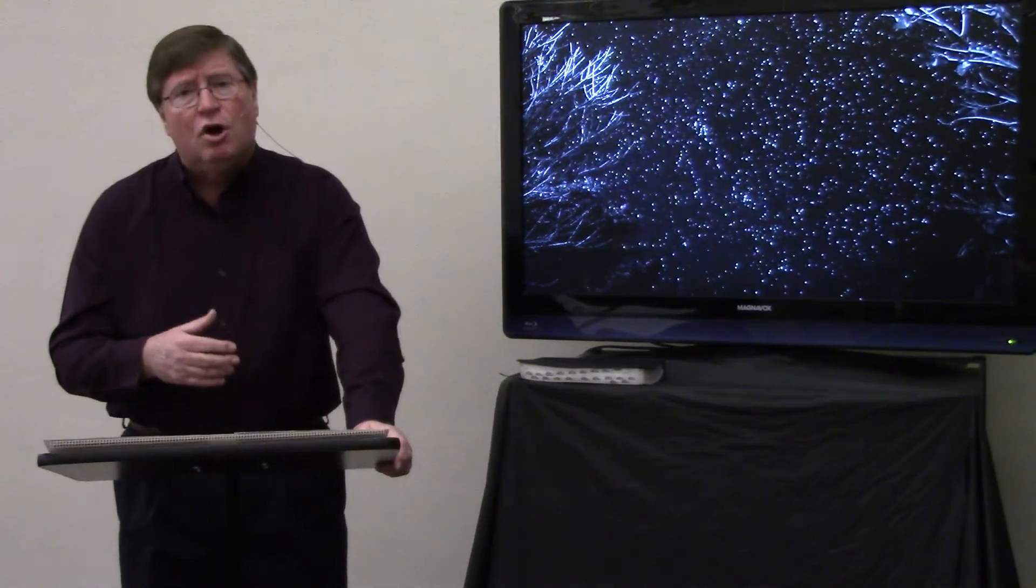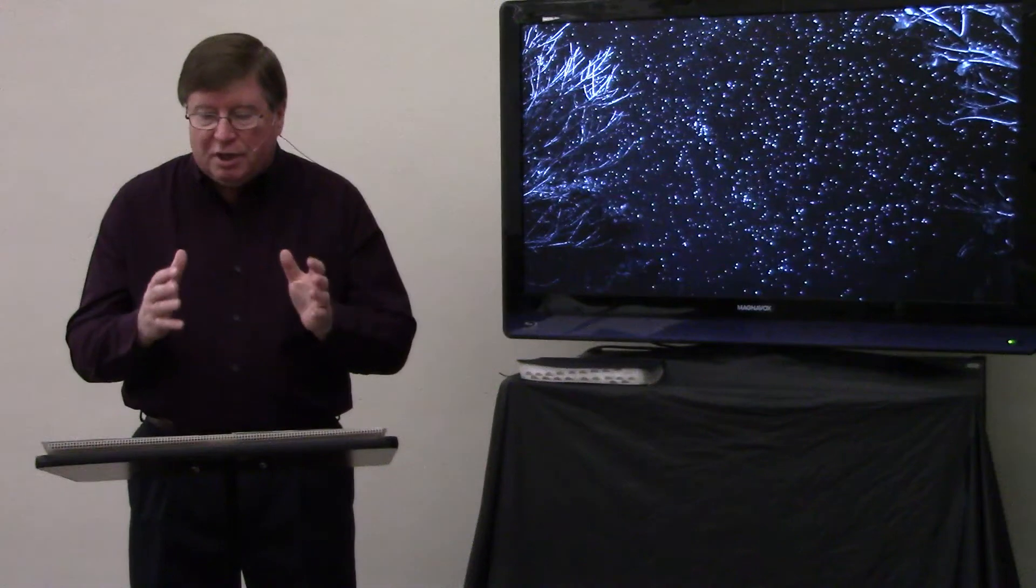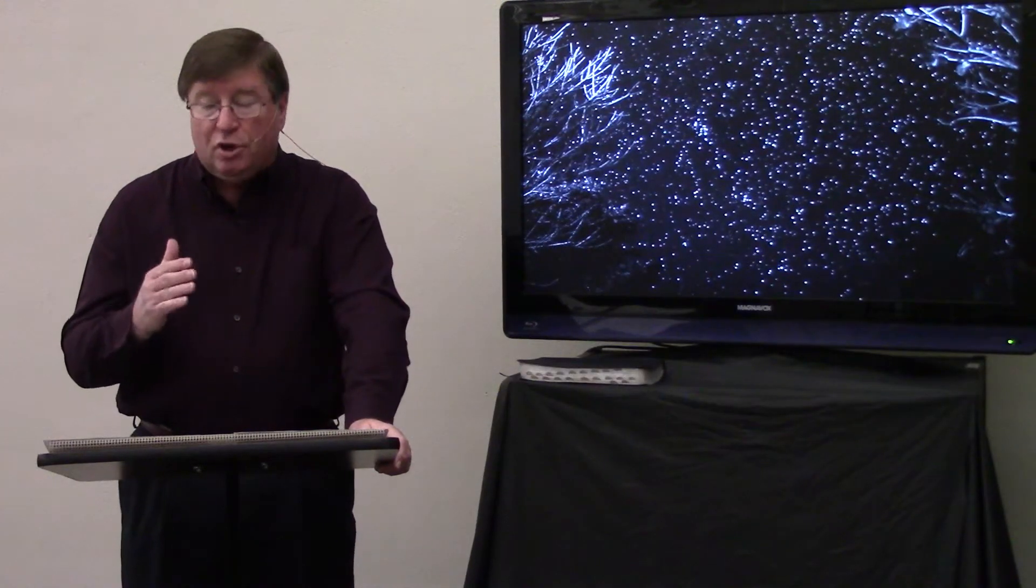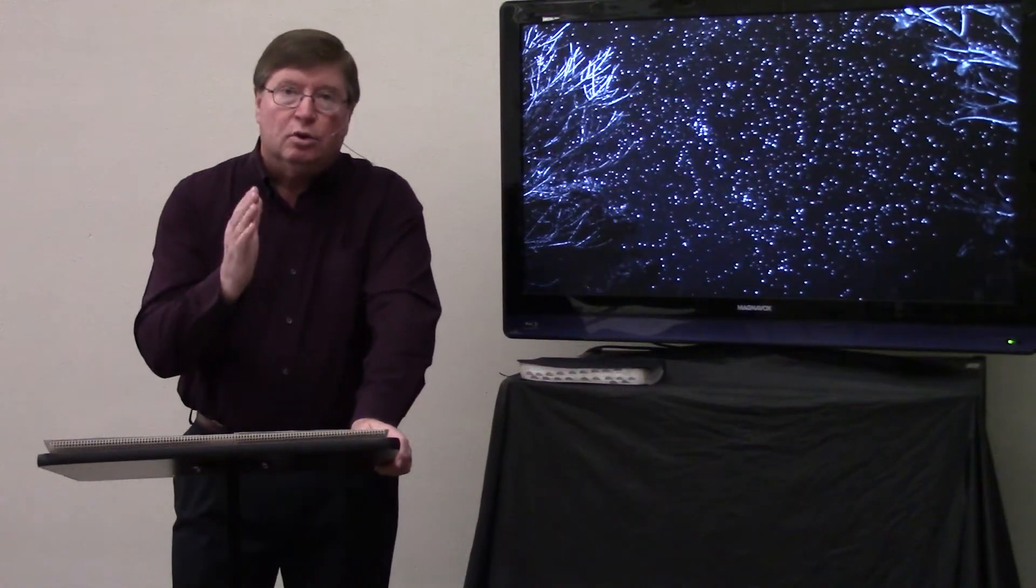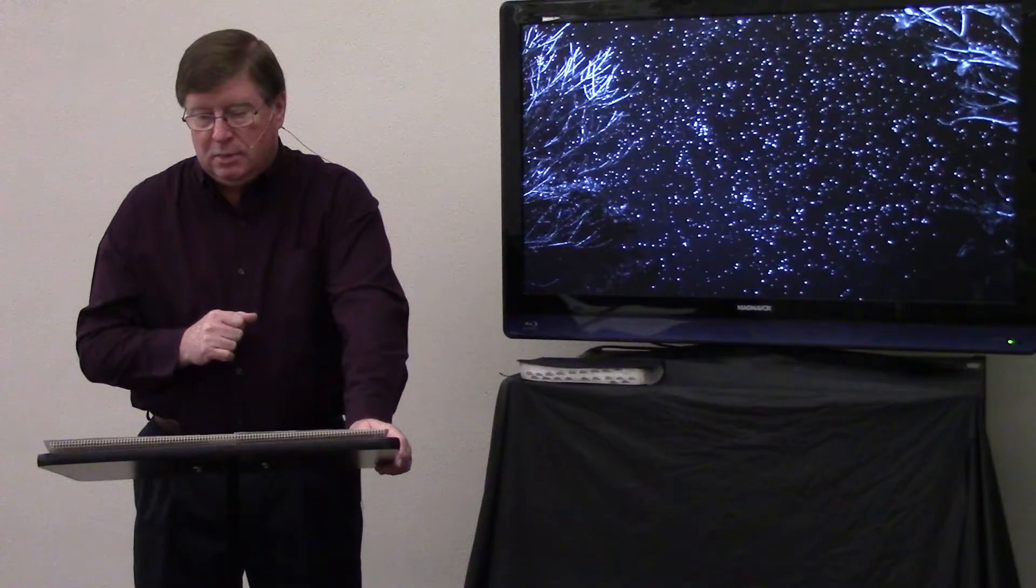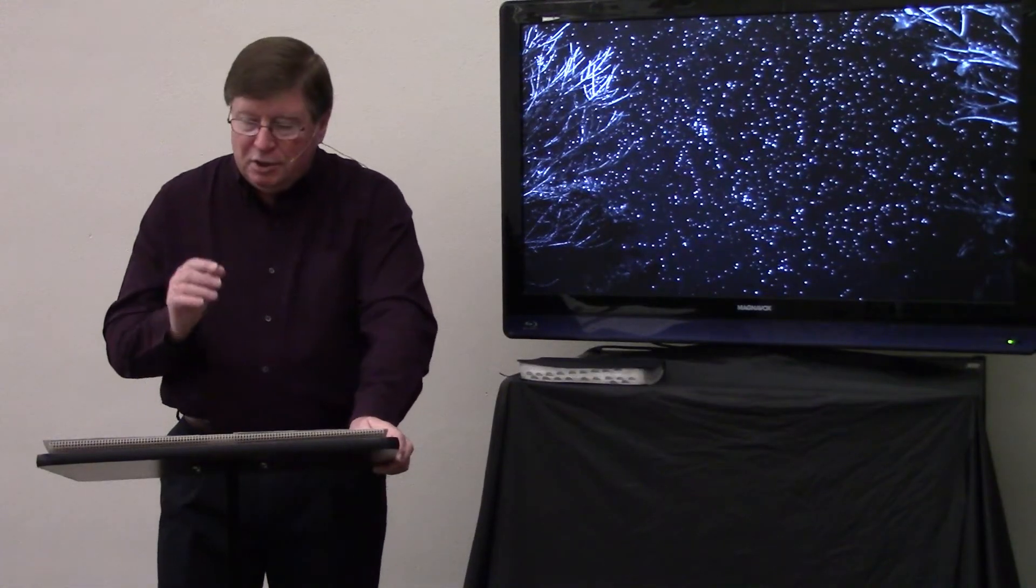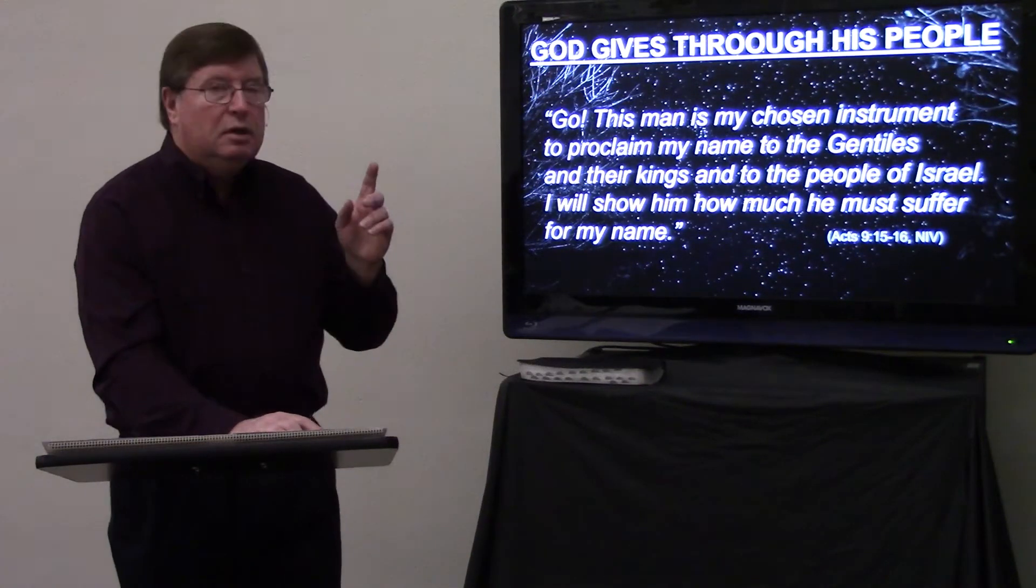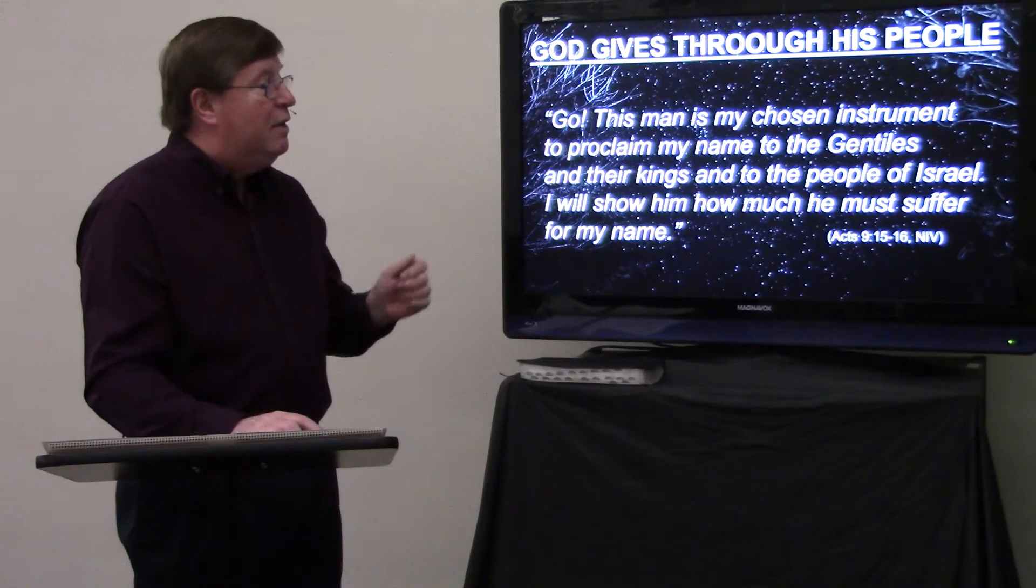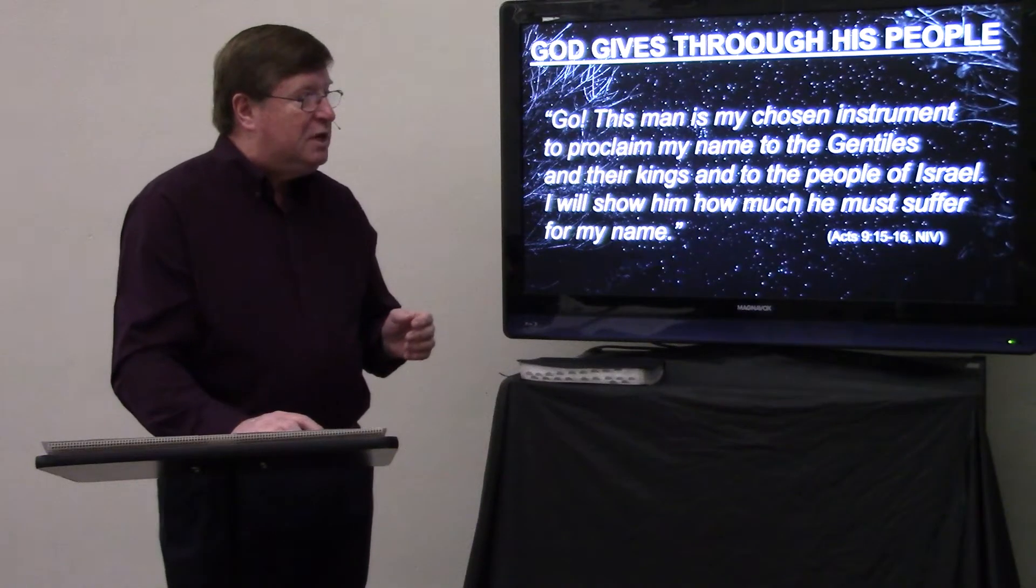In Acts chapter 9, after Saul had been blinded on the road to Damascus, he was taken to Damascus and there a disciple named Ananias was instructed by the Lord in a vision to go to the house of a man named Judas on Straight Street and ask for a man there from Tarsus named Saul. Well, Ananias replied to the Lord this way. He said, Lord, I have heard many reports about this man and all the harm he has done to your holy people in Jerusalem. And he has come here with authority from the chief priests to arrest all who call on your name. Now I want you to listen to the response by the Lord to Ananias. Go. This man is my chosen instrument to proclaim my name to the Gentiles and their kings and to the people of Israel. I will show him how much he must suffer for my name. Verses 15 and 16 of Acts chapter 9.